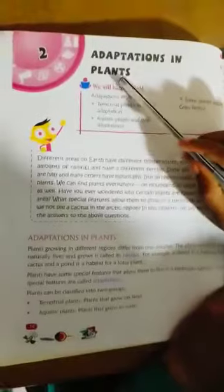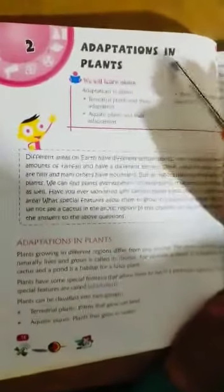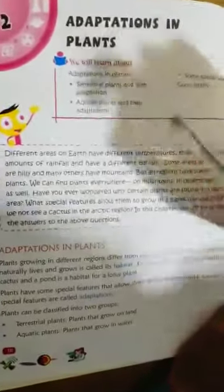But today's chapter covers the second letter, that means P. P means plants growing in plains. In the previous classes I have already discussed about adaptation in plants. Let's come to the topic — chapter 2, adaptation in plants.